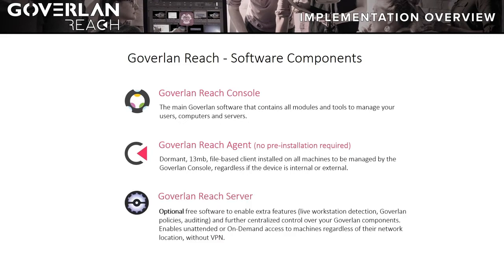And finally, the Goverland Reach Server — an optional free component that enables extra features like logged-in workstation detection, Goverland-based policies, auditing, and management of external machines via the built-in Goverland Reach gateway.